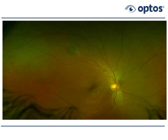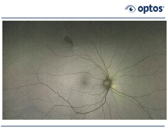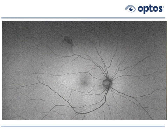Here's a CHRPE lesion from a resident of mine — supratemporally in the right eye, a darkish lesion. On autofluorescence it appears dark. OCTs through this show congenital hypertrophy with RPE still present, but the photoreceptor integrity line above it is actually missing. The nevi will disappear on autofluorescence, while CHRPE lesions will show up as dark lesions.